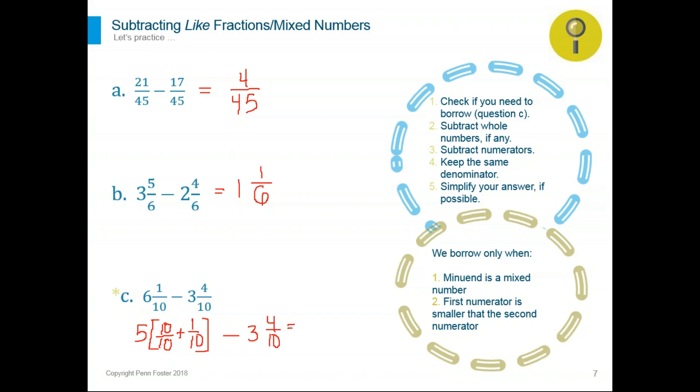Let's combine the two fractions here and rewrite our problem as 5. And then 10 plus 1, it's an addition, same denominator, follow the rules for addition. 10 plus 1 is 11 over 10. And we still have to subtract 3 and 4 over 10. Now look at the problem. 11 minus 4, yes, we can do it. We have common denominators.